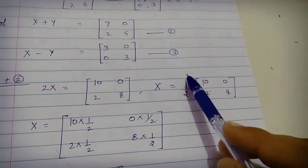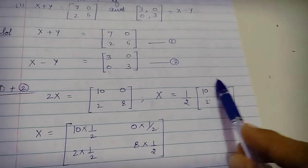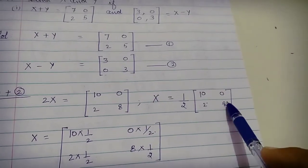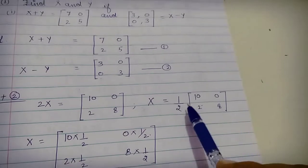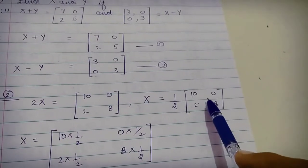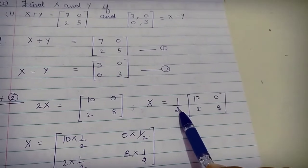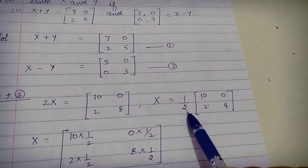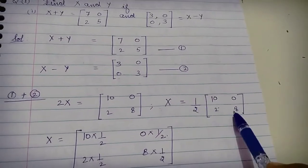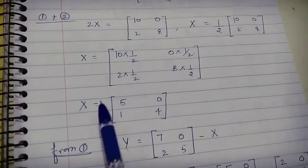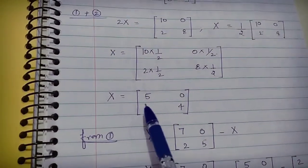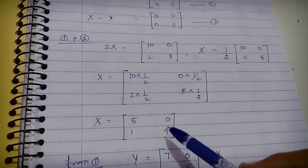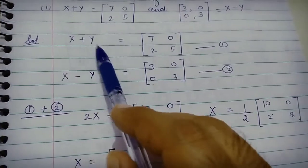To find X, we transpose — that is, divide by 2 — so X equals half of [10, 0, 2, 8]. This involves scalar multiplication: multiplying each element of the matrix by one half. So half of 10 is 5, half of 0 is 0, half of 2 is 1, and half of 8 is 4. Therefore X equals the 2×2 matrix [5, 0, 1, 4].